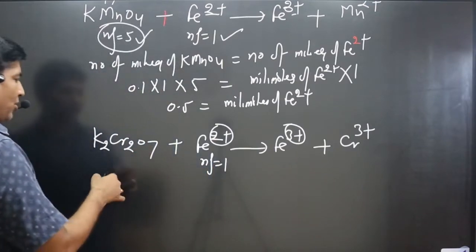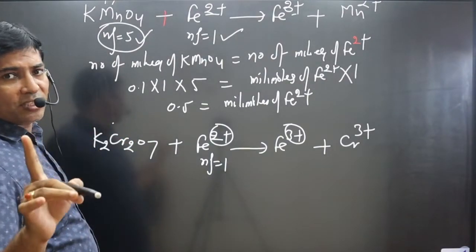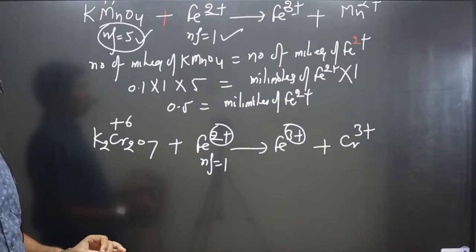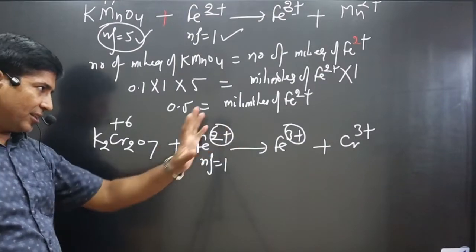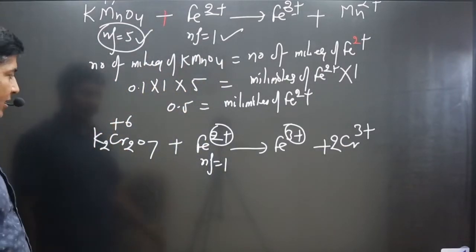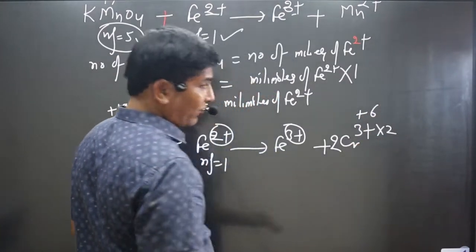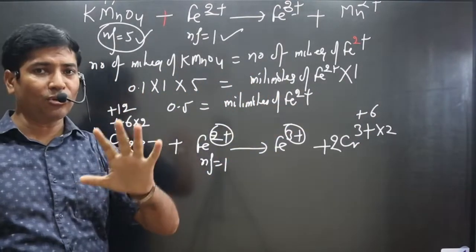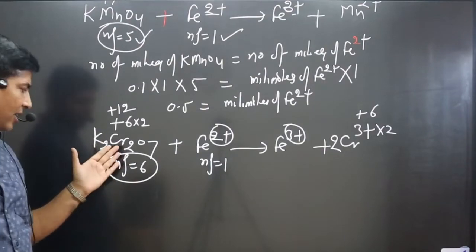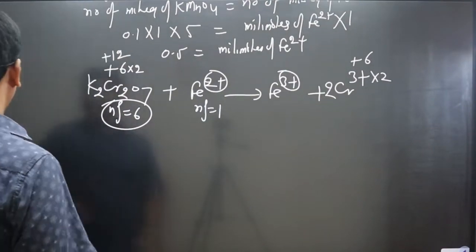For K₂Cr₂O₇: potassium is +1, and there are 2 Cr atoms each at +6 oxidation number on the left side (2 × +6 = +12 total). On the right side, Cr is +3, so 2 Cr gives +6. The difference in oxidation number is 12 − 6 = 6. Always balance the number of atoms before balancing charge. The n-factor value for K₂Cr₂O₇ is 6.